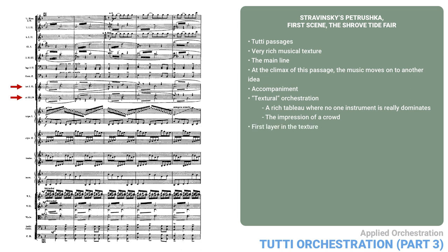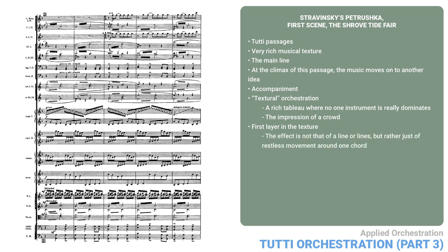First, there are three horns doing 8th note trills. The clarinets and flutes do something similar an octave higher, but in 16th notes. Violas double the horns, framed by the second violins. The top notes in the second violin are the same as the flutes in 16th notes, but the second violin lower pitches are in 8th notes. Given all these instruments playing with this kind of variation in rhythm, the effect is not that of a line or lines, but rather just of restless movement around one chord.